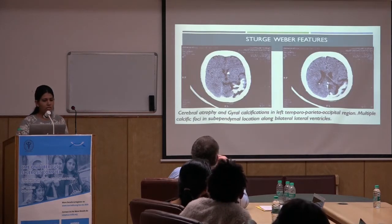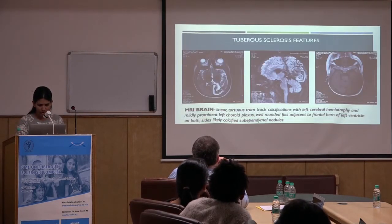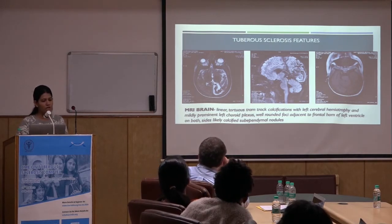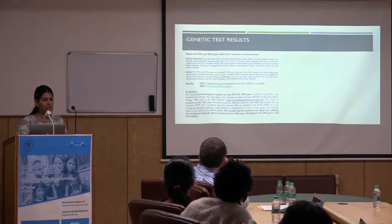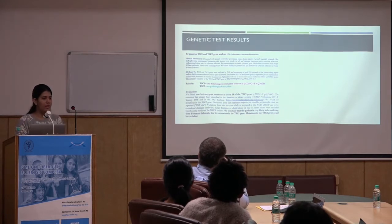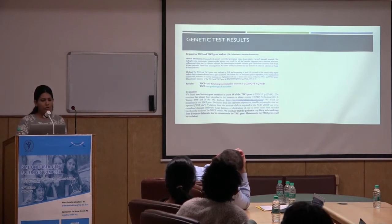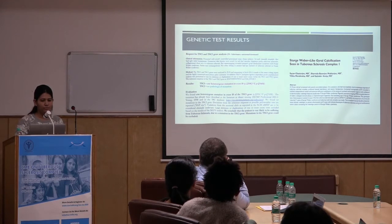This is the CT head, which is suggestive of cerebral atrophy and gyral calcifications. Further MRI imaging of the child at the time of admission showed linear torchlight-type calcifications and calcified subependymal nodules. This is the genetic test which was performed. A paper had been presented by our esteemed faculty, Dr. Sharma, on the same patient because of the overlapping features, in the 2015 Journal of Neurology.